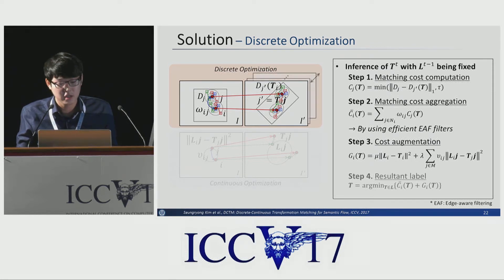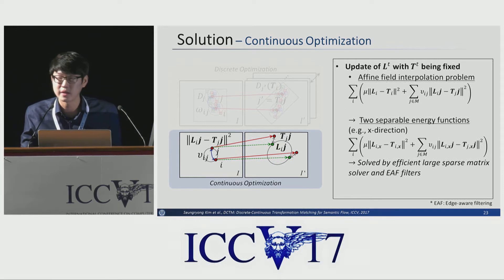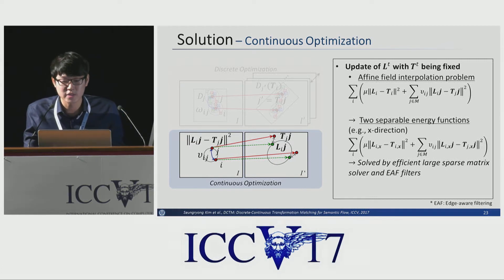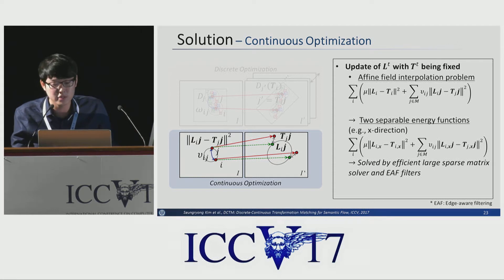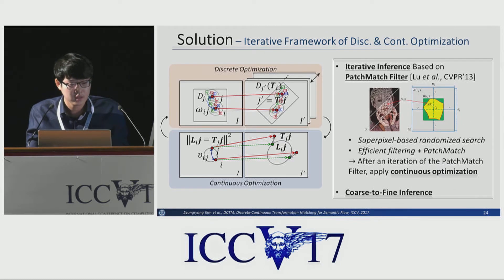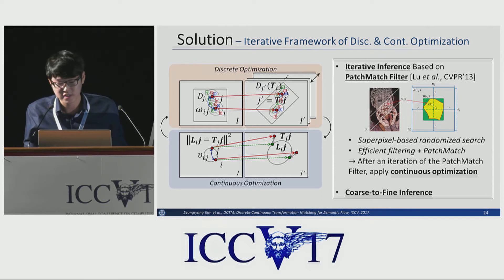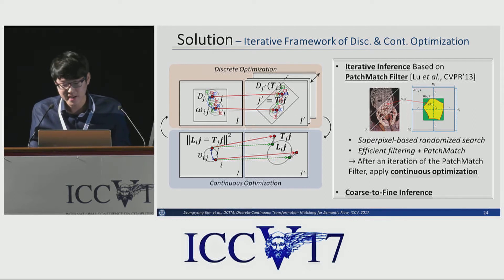With cost aggregation, the final discrete affine transformation field is determined from a set of possible solutions. In continuous optimization, we reformulate the continuous energy function into an affine field interpolation problem. Conventional moving least squares cannot be used directly due to high computational complexity, so we decompose this energy function into two separate energy functions along the X and Y directions, which can be solved efficiently using a linear system solver and edge-aware filters. We also employ a coarse-to-fine iteration scheme.